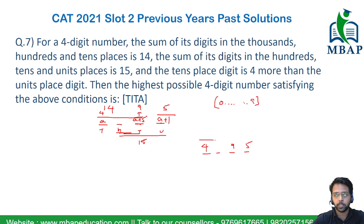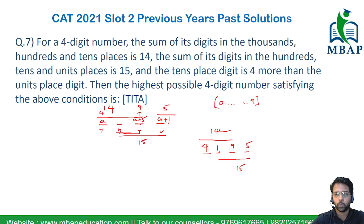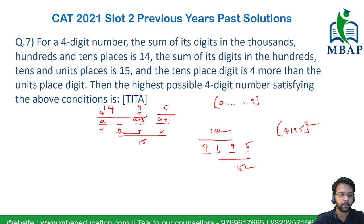We want the sum of the thousands, hundreds, and tens digits to be 14, and the sum of the hundreds, tens, and units digits to be 15. The only value for the hundreds digit satisfying this condition will be 1, because 4+1+9 = 14 and 1+9+5 = 15. Hence the maximum value for the answer is 4195. That's the final answer for this question.